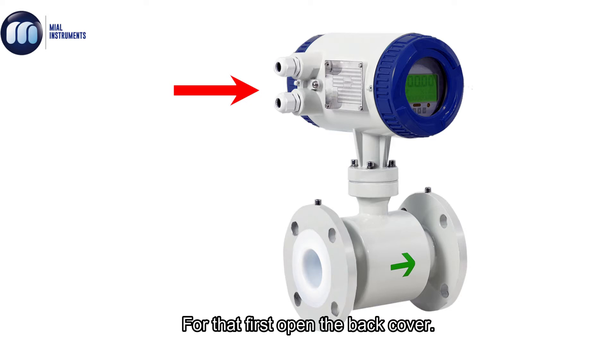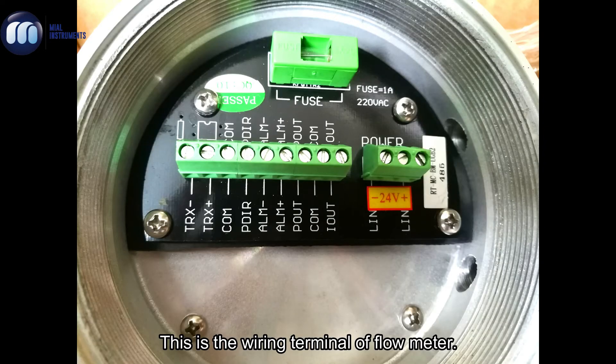For that, first open the back cover. This is the wiring terminal of the flow meter.